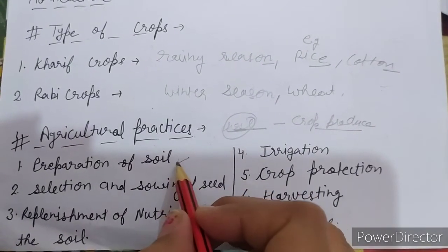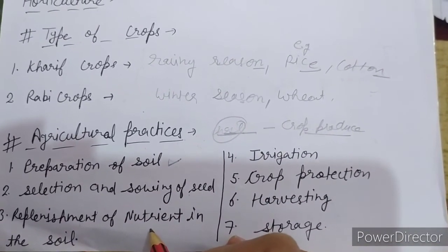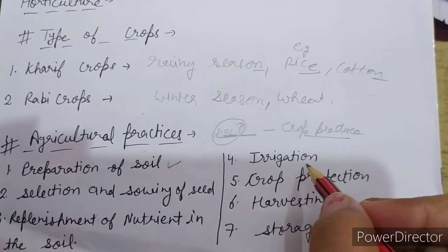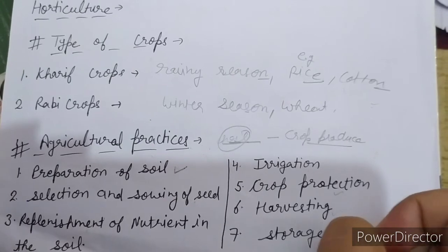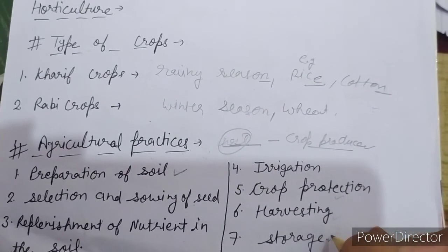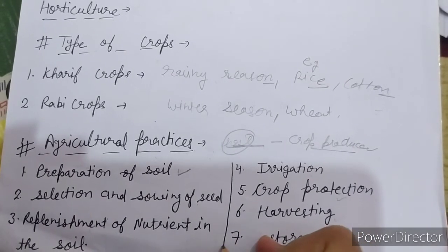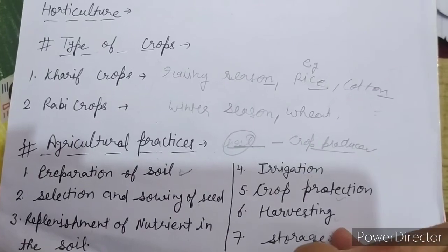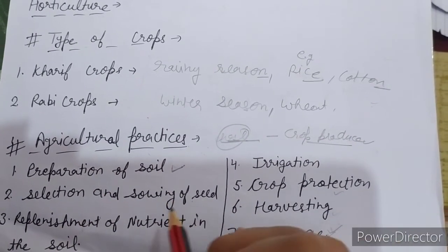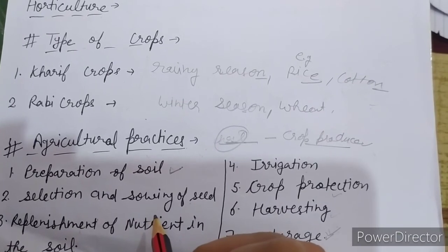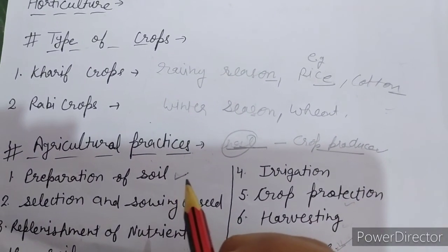The seven agricultural practices are: first, preparation of soil; next, selection and sowing of seed; next, replenishment of nutrients in the soil; next, irrigation; next, crop protection; next, harvesting; and last, storage — जब crop produce प्राप्त हो जाए उसके बाद store करते हैं। We will study these seven agricultural practices in the next video. So you have to read this chapter till agricultural practices. Thank you, bye bye, keep studying, stay home, stay safe.